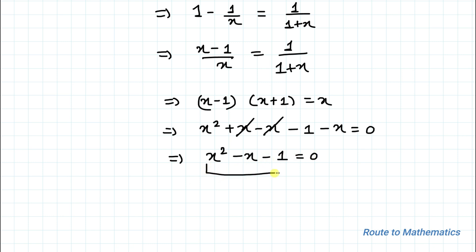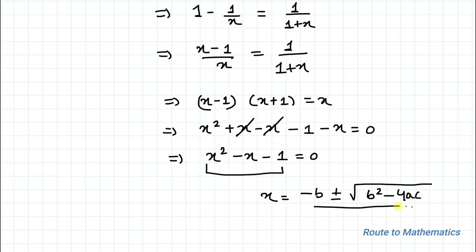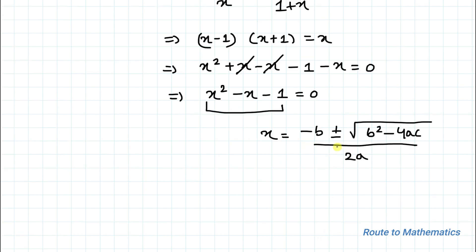We can see that we have a quadratic equation. In order to find the value of x we will apply the quadratic formula: x = (-b ± √(b² - 4ac)) / 2a, where a, b, c are the coefficients of the quadratic equation. Here a = 1, b = -1, and c = -1.